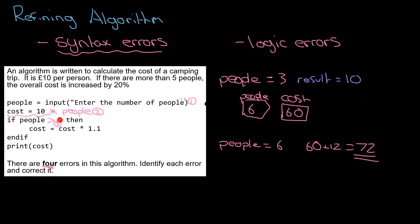That's our third error. If people greater than five, then cost equals cost times by 1.1. That's going to increase it by ten percent, and that is definitely not the right value. It should be twenty percent. I'm going to end up with 66, so that's my last mistake. That shouldn't be 1.1, it should be 1.2. So there's my four errors: one syntax error and three logic errors.